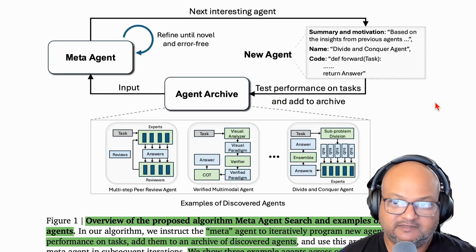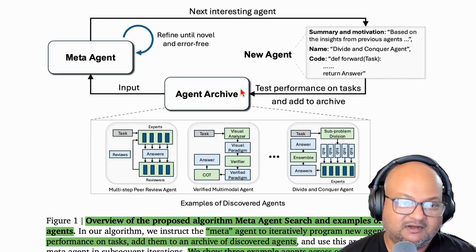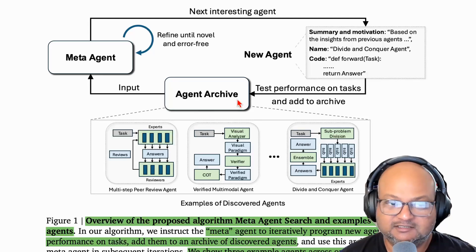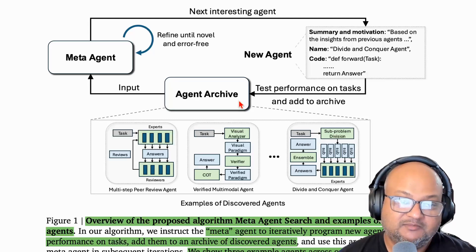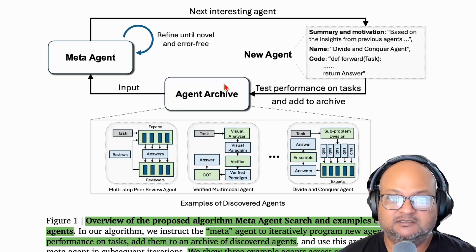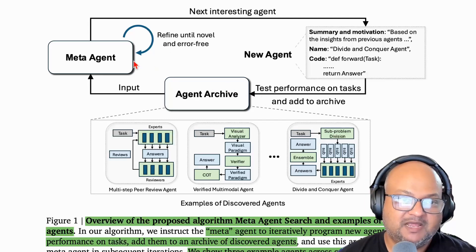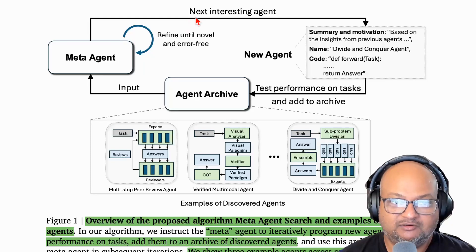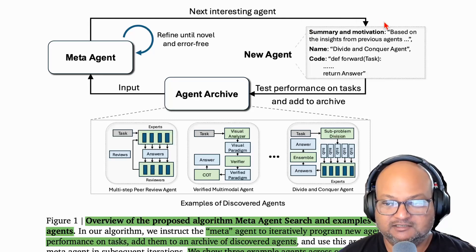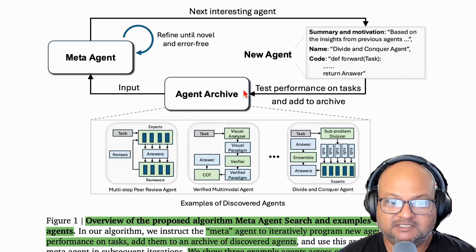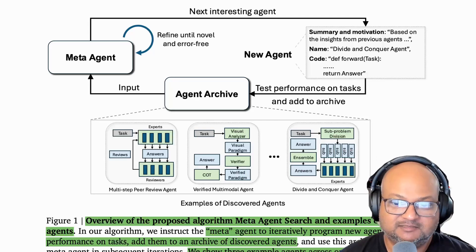At a very high level, this is how the system works. You have an archive of agents — it starts off with just the hand-coded agents you have, which might be pretty simple. But as the system discovers newer, more interesting agents, it adds them to this archive. The meta agent has the task of proposing and discovering new interesting agents. Those new agents are then evaluated on a test set, and if the performance is good, they're added to the archive and you keep iterating on this pattern.